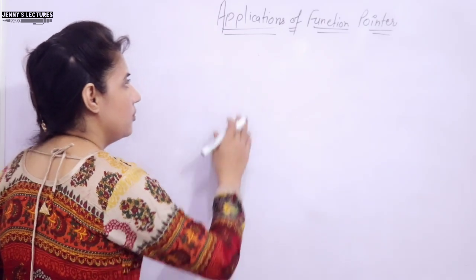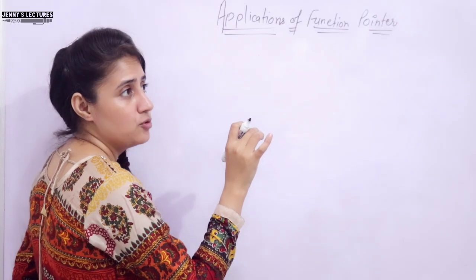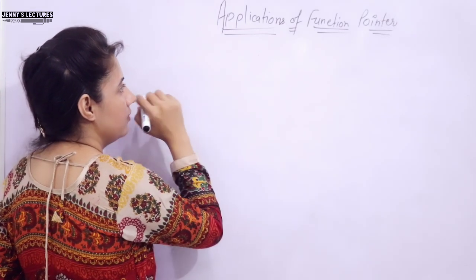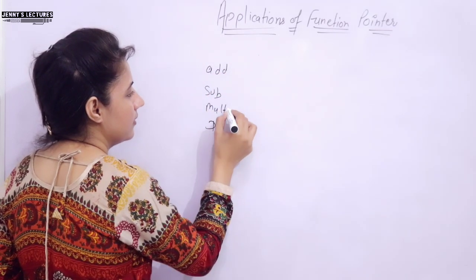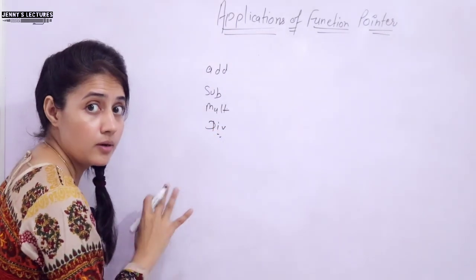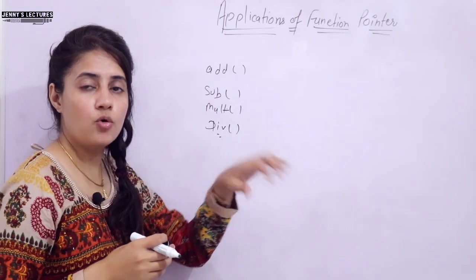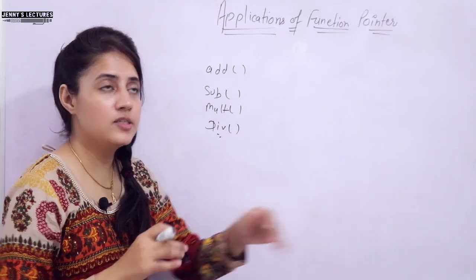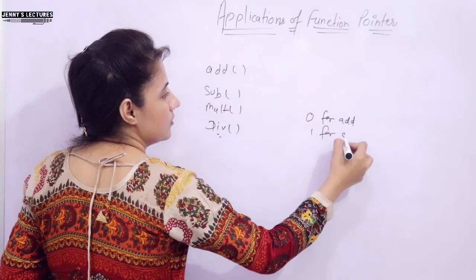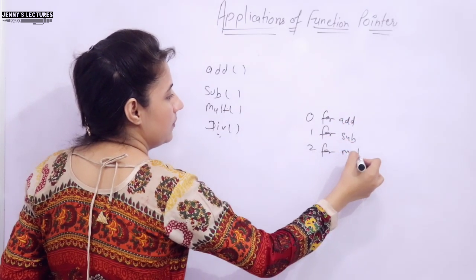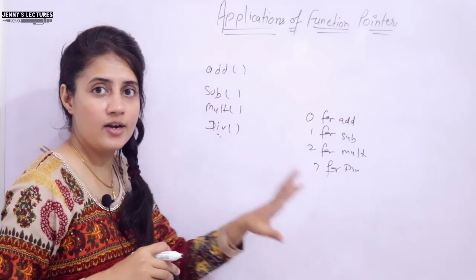Now let's see one more application of function pointers. For example, suppose we want to design a calculator and we have four functions: add, subtract, multiply, and divide. According to the user's choice — press 0 for addition, 1 for subtraction, 2 for multiplication, and 3 for division — we will call the corresponding function and perform that operation.